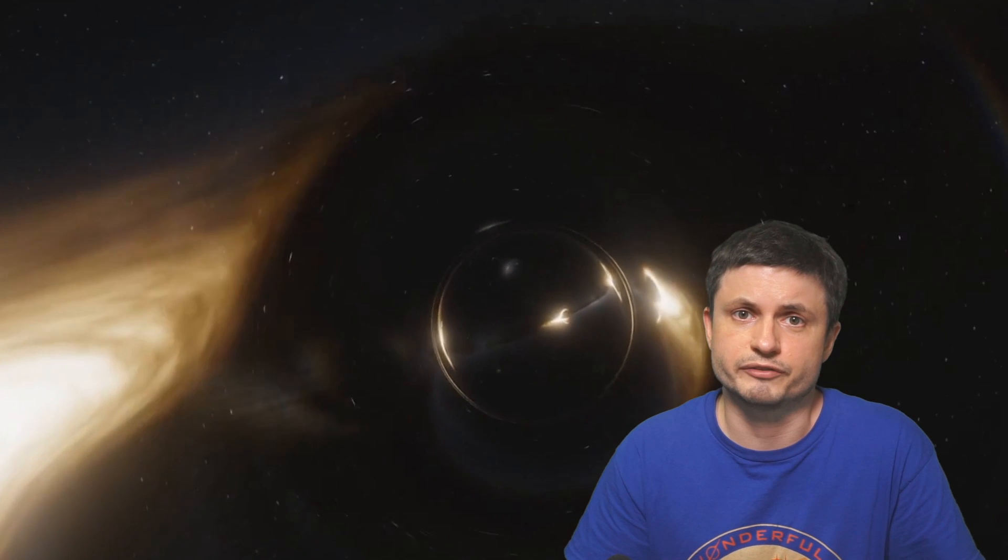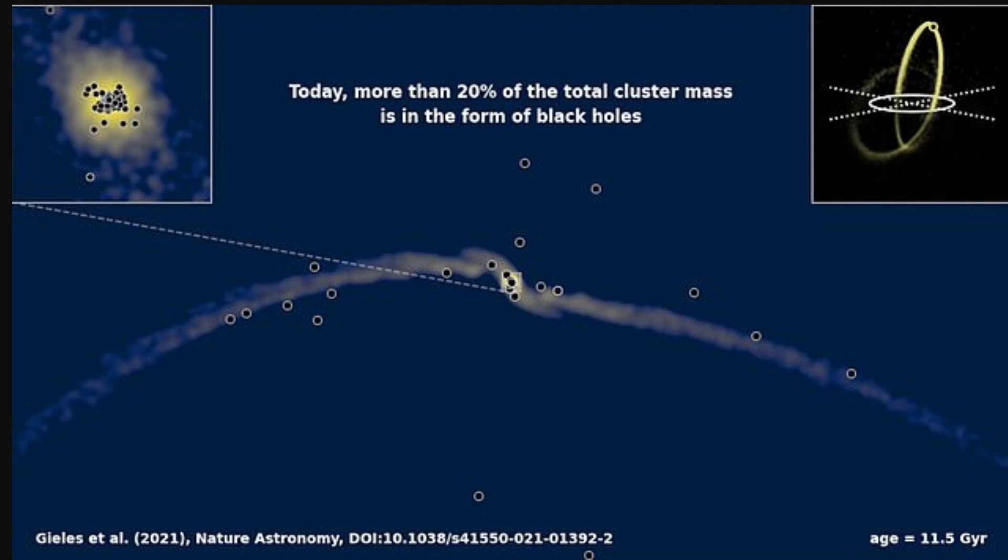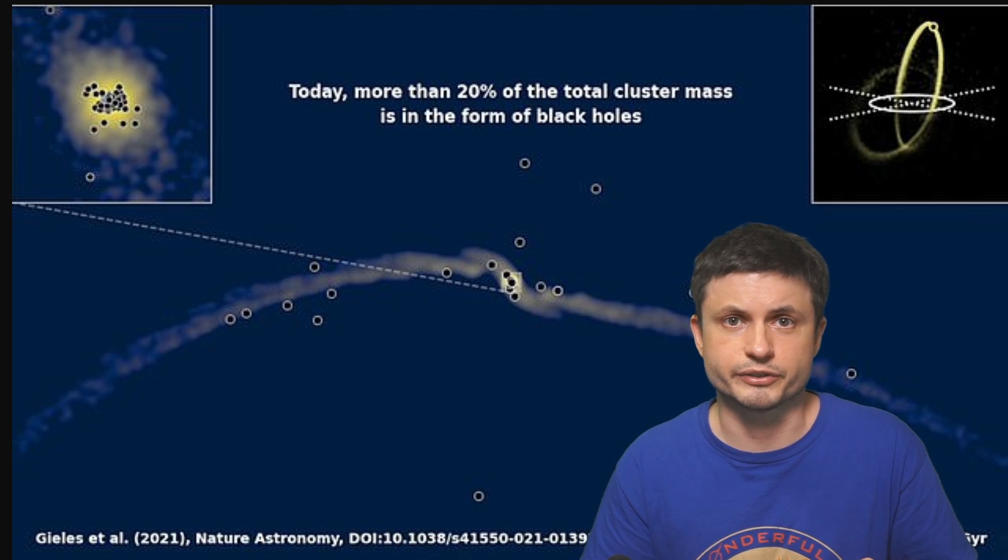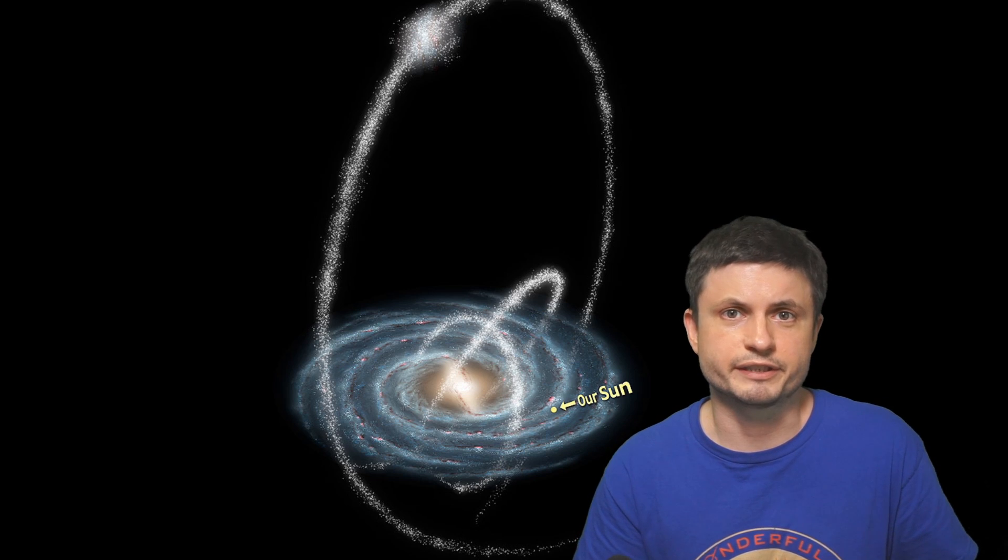with potentially one explanation being that maybe there were just a lot of really massive stars to begin with. Maybe initially this cluster just had a lot of different stars that turned into all of these black holes, with an average mass of a star just being higher than in other clusters. But there are a few more things that make Palomar 5 really unusual.